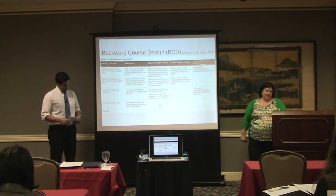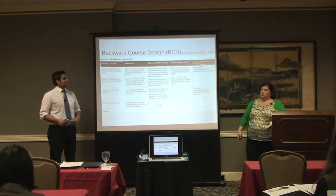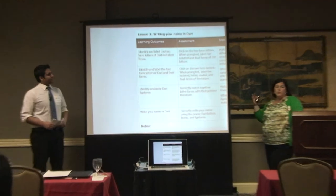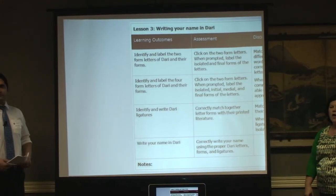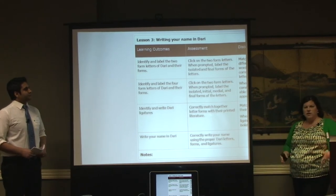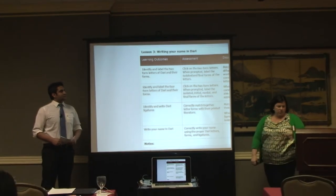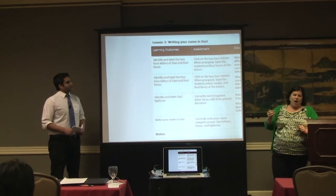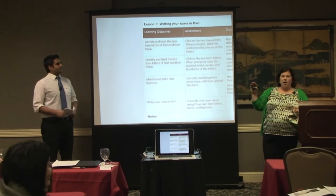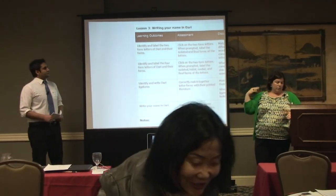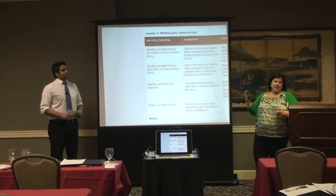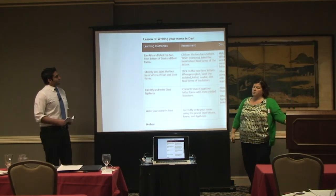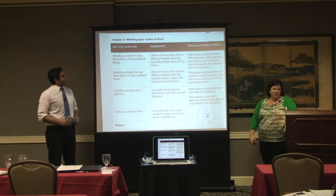For our learning outcomes, we ask ourselves what we want the learners to be able to know, and specifically what they have to have mastered in order to be done with this lesson and move on to the next lesson. Sometimes we're asking the learners to produce something, like write your name. But sometimes, because at this level we're not really expecting them to produce something reliably and consistently, we just ask them to identify — to be able to show that they understand the concept even though they can't reliably produce it yet.